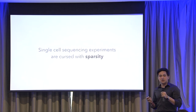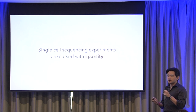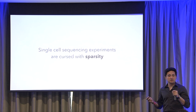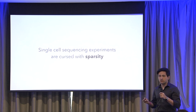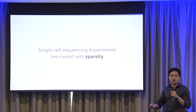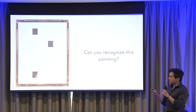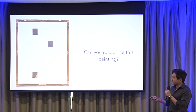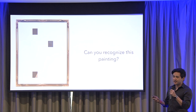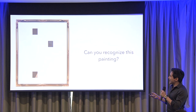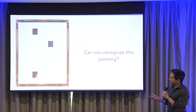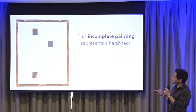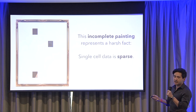But the problem is that single cell methods are cursed with sparsity. This is where the information collected is mostly zeros — mostly negative information rather than positive. You may not have sampled it, or there could have been dropout. To give an example: can anyone identify what this painting is? This incomplete painting represents a harsh fact, which is that single cell data is sparse.